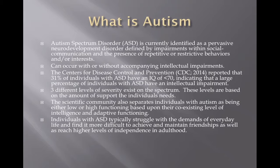Autism is currently identified as a pervasive neurodevelopmental disorder defined by impairments within social communication and the presence of repetitive or restrictive behaviors and/or interests. This can occur with accompanying intellectual impairments, and according to the CDC, approximately 31% of individuals with ASD have an IQ below 70, indicating that a large percentage of individuals with ASD also have an intellectual impairment.